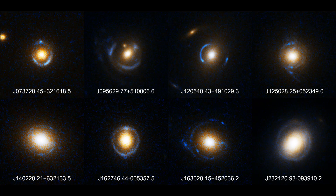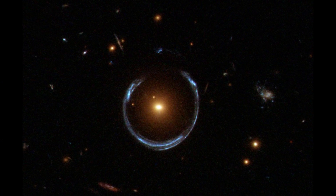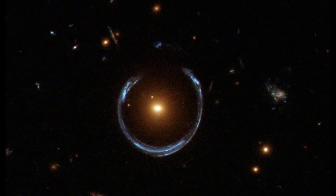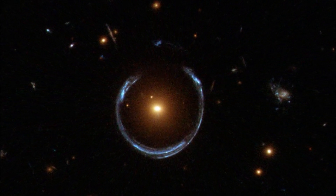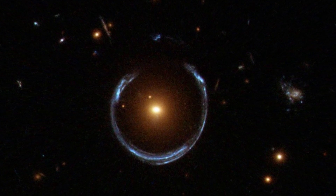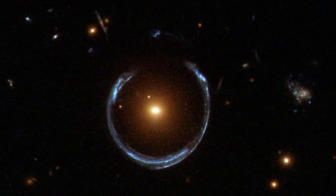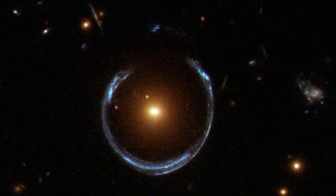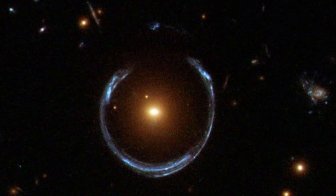This phenomenon is called gravitational lensing, first predicted by Albert Einstein almost a century ago. Gravitational lensing occurs when the gravitational field from a massive object warps space and deflects light from a distant object behind it. The bullseye patterns are so-called Einstein rings, which are the most elegant manifestation of the lensing phenomenon.